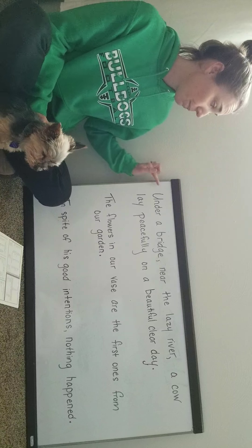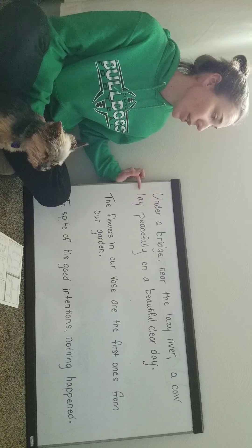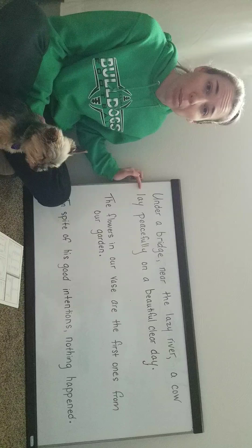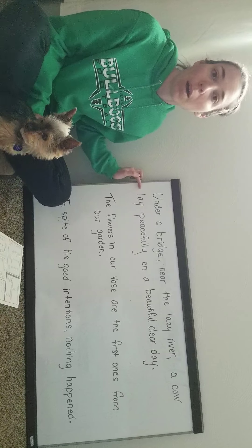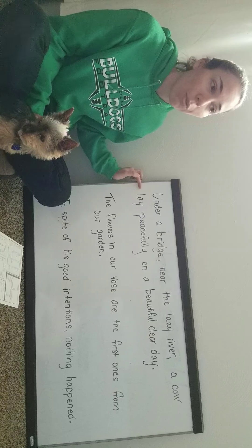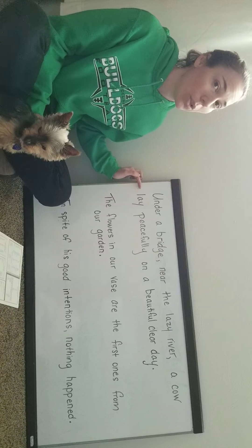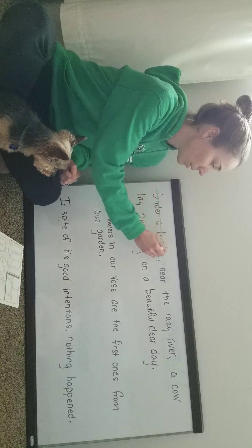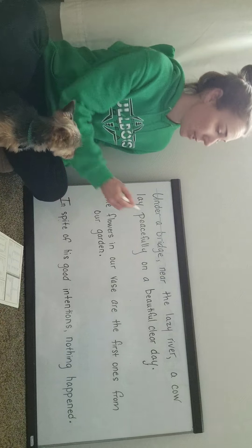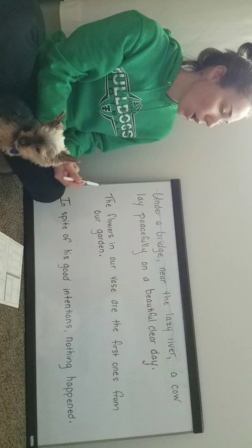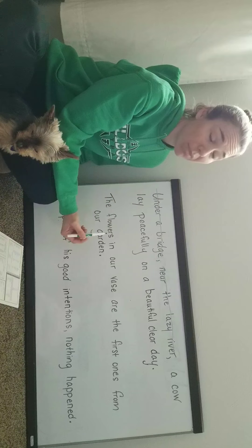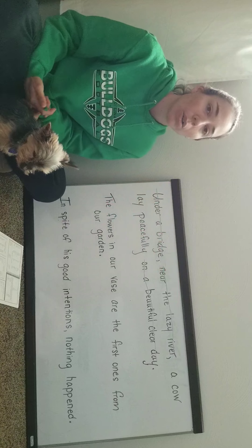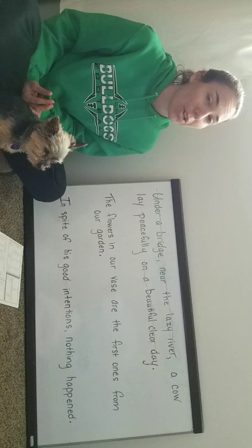For instance, in this first sentence: 'Under a bridge near the lazy river, a cow lay peacefully on a beautiful, clear day.' That's a lot of words, and if I'm asking you to analyze things — make sure your commas are in the right place, figure out what kind of sentence it is, simple, compound, or complex — you're going to have to sort through a lot. But if we can find the prepositional phrases, we can simplify this. 'Under a bridge' is a prepositional phrase, 'near the lazy river' is another, and 'on a beautiful, clear day' is another. If I weed those out, what I'm left with is 'a cow lay peacefully' — just four words. Much, much easier to understand.